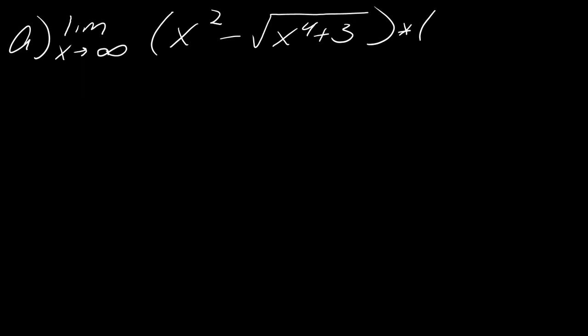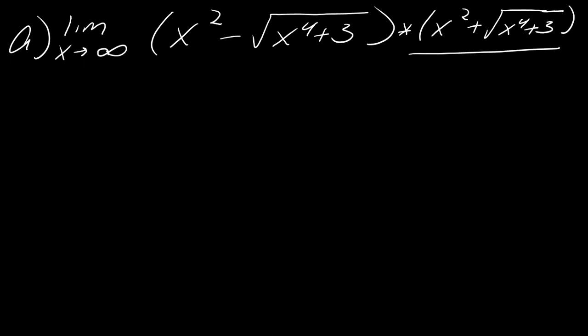Since you can't figure this out, you're going to use the conjugate. I'm going to straight up multiply by the conjugate — so this is x squared plus the square root of x to the fourth plus three. Feel free to pause the video here and work this out on your own, then hit play when you're ready.